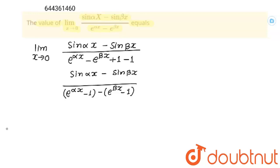And in numerator this will be sin alpha x minus sin beta x. What is our next step? I am going to divide whole numerator by x and whole denominator by x, and we will separate this division.